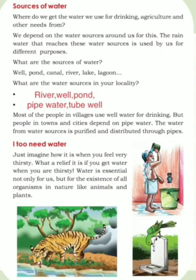Sources of water. Where do we get the water we use for drinking, agriculture, and other needs from? We depend on the water sources around us for this. The rainwater that reaches these water sources is used by us for different purposes.